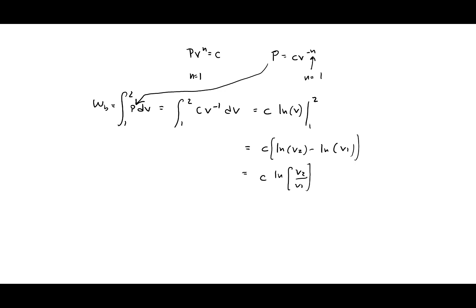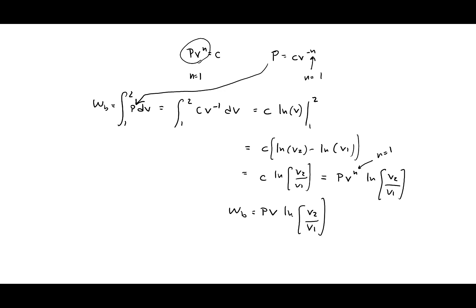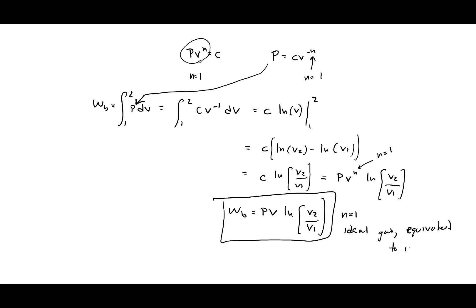Replacing C with PV to the N, and knowing N equals 1, the boundary work simplifies to W = PV · ln(V2/V1). This is the result for N = 1 for a polytropic gas. For an ideal gas, this is equivalent to an isothermal process. Thank you for watching.